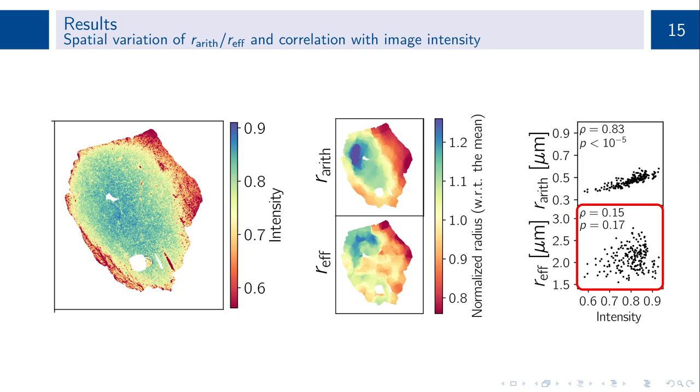Consequently, mapping spatial and anatomical variation of the effective radius on whole LSLM sections may be feasible using our pipeline, whereas for the arithmetic mean radius, it is not.